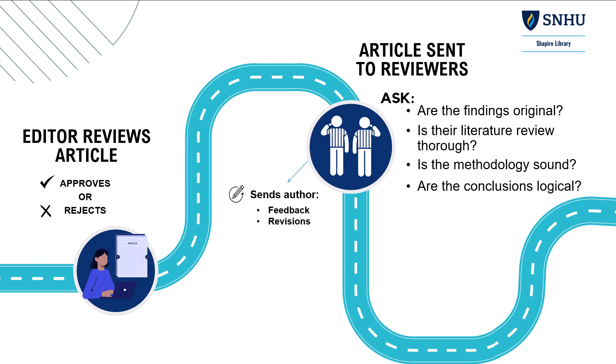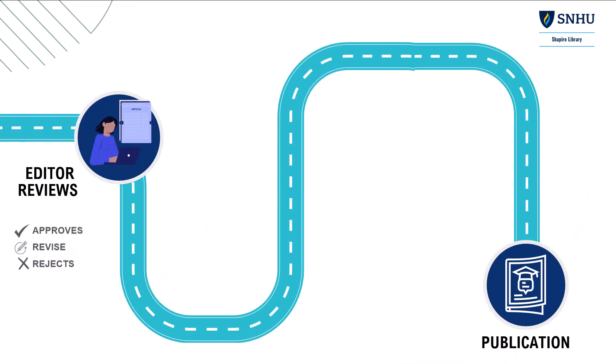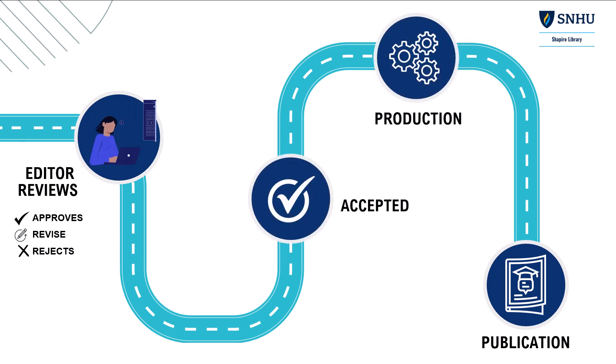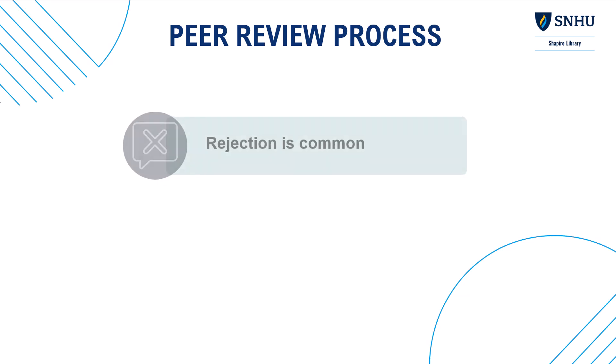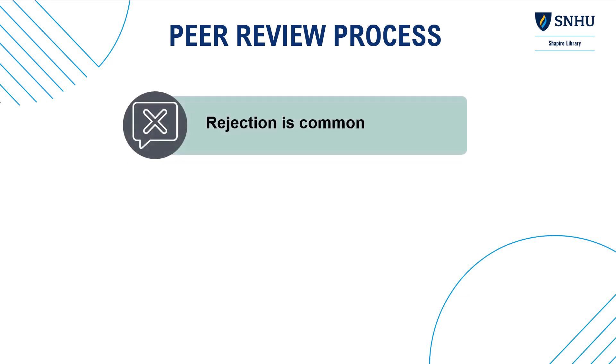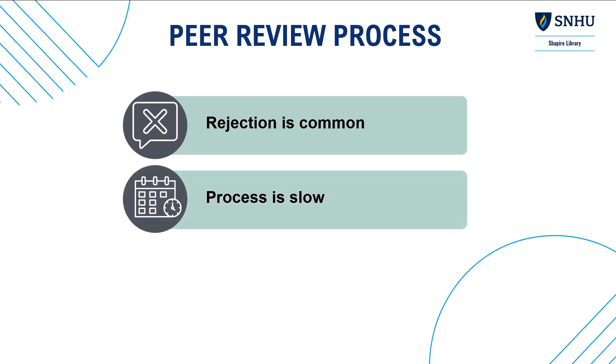The reviewers then make a recommendation to the editor. The editor, however, makes the final determination of whether the article should be approved, rejected, or revised. Rejection is common — the most prestigious journals are very selective, so they tend to have high rejection rates, with some journals rejecting more than 90% of submissions. From the time the researcher first submits their draft to the time it's finally published, several months or years may have elapsed.